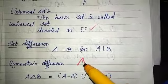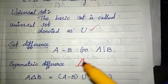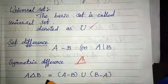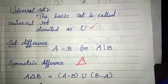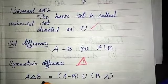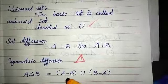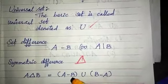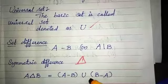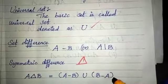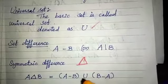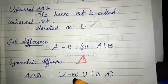Symmetric difference: it is denoted by the delta symbol. The symmetric difference A delta B is defined as A minus B union B minus A.